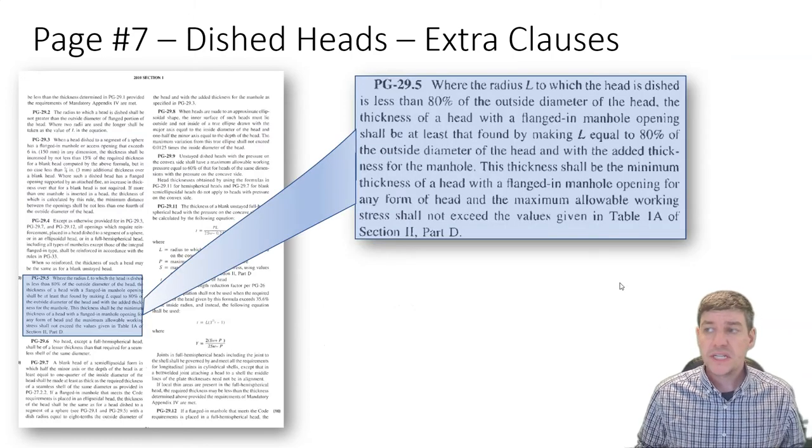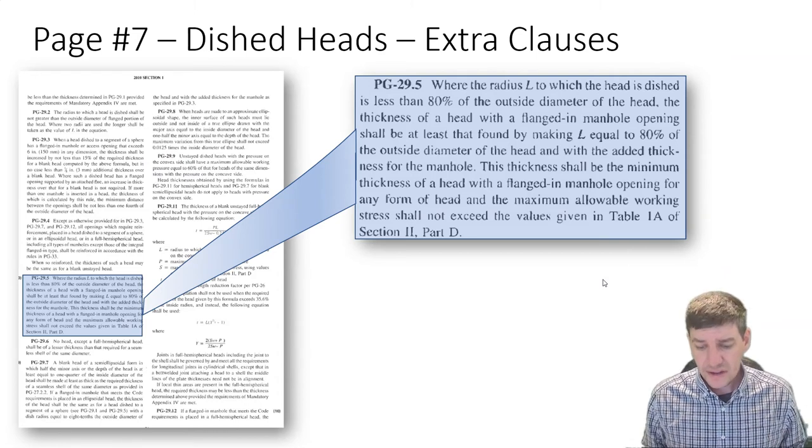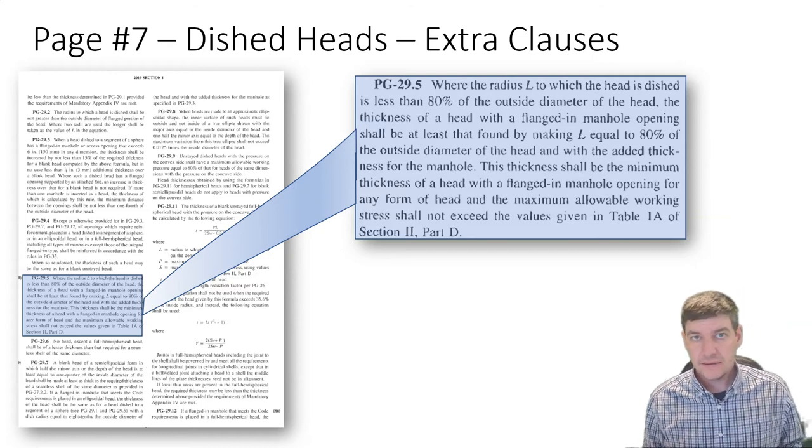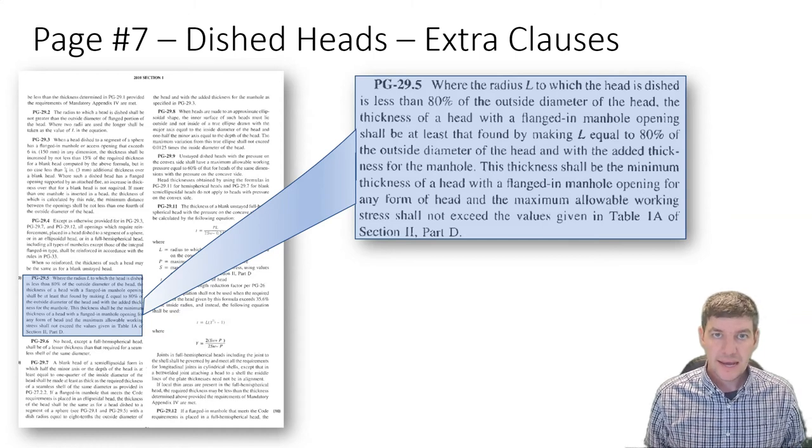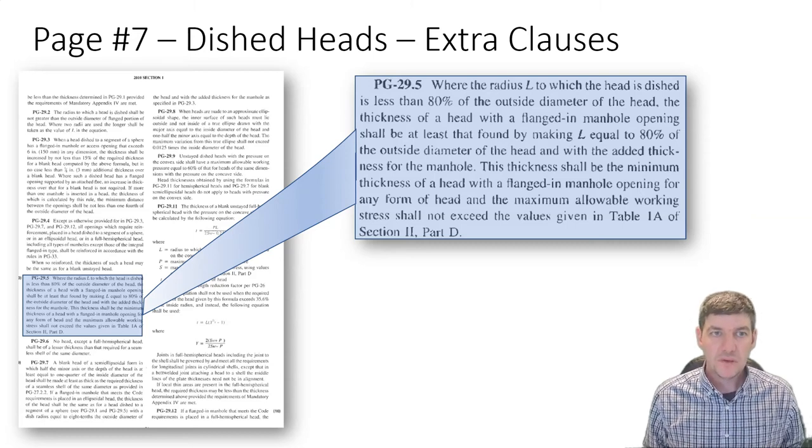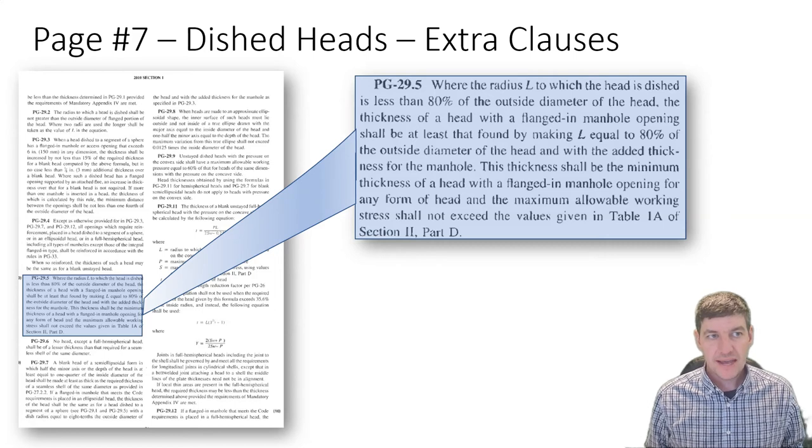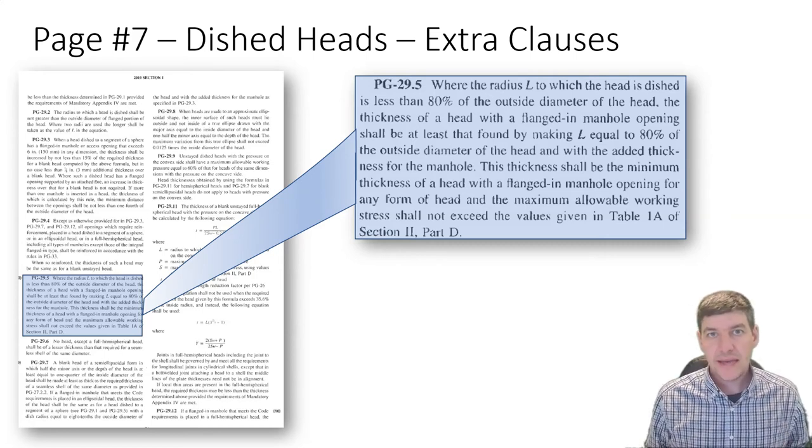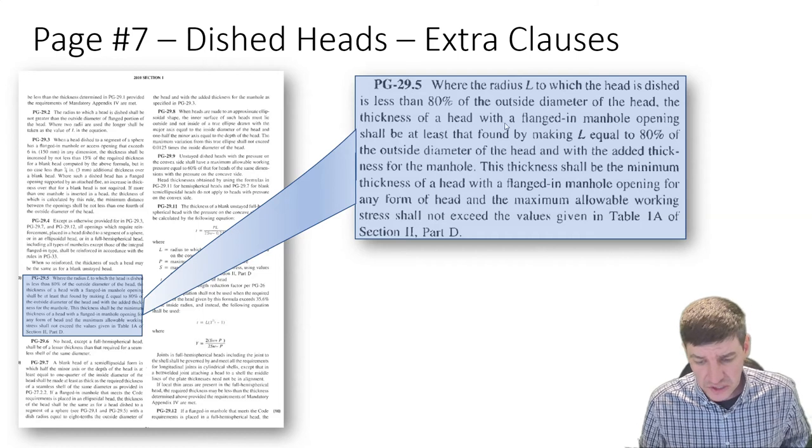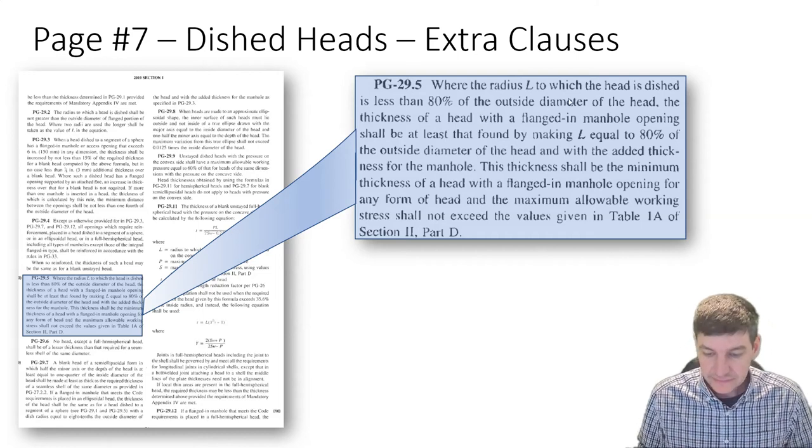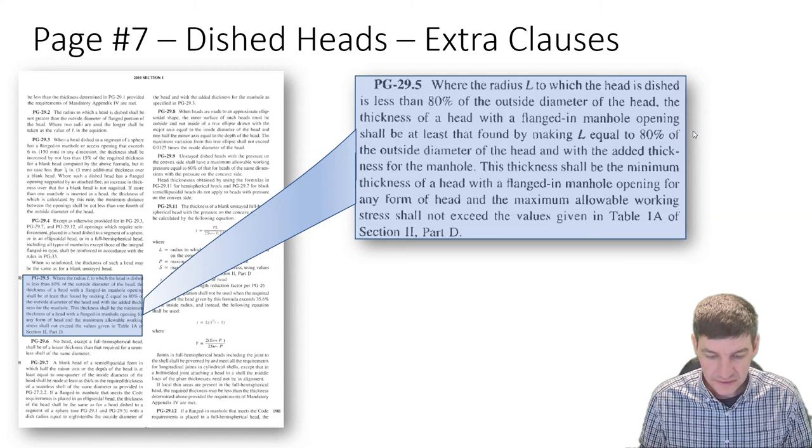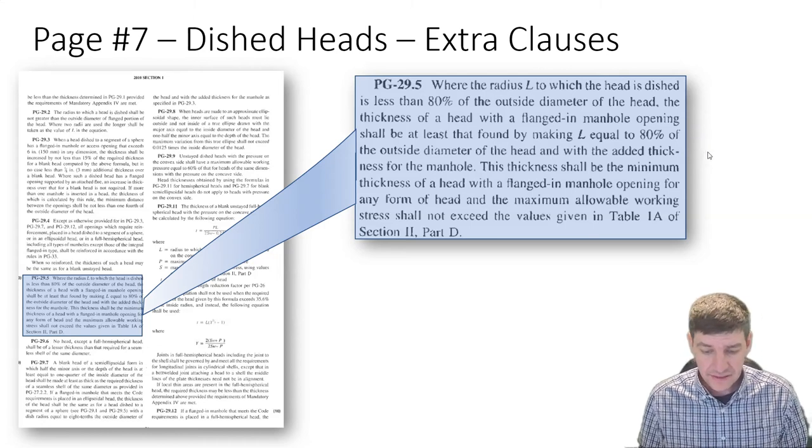We also have PG 29.5. Where we have a dished head, meaning we have this L value (that larger radius), and we have a manhole - dished head with manhole - we have to make sure we have a certain ratio with the L to the diameter. It says the thickness of the head with a flanged manhole opening shall be at least that found by making L equal to 80% of the outside diameter of the head with the added thickness for the manhole.